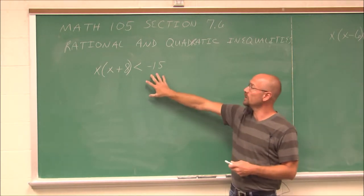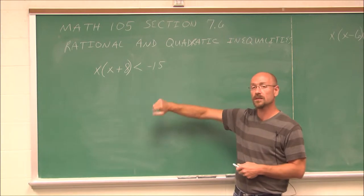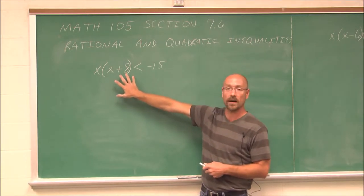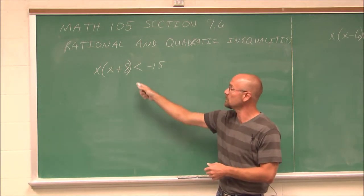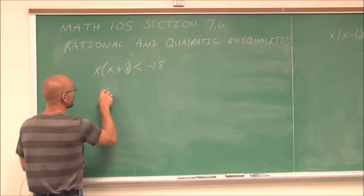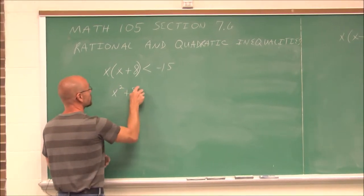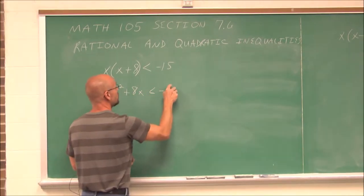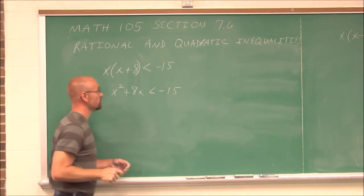So how would we go about solving this one? Since it's not linear, if I simplify this just a little bit, I'm going to distribute that x. We're going to get x squared plus 8x is less than negative 15.